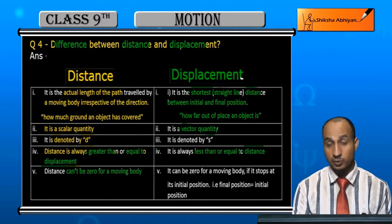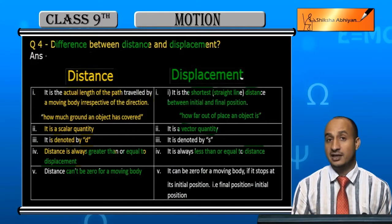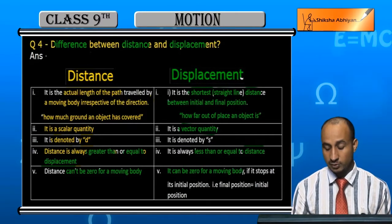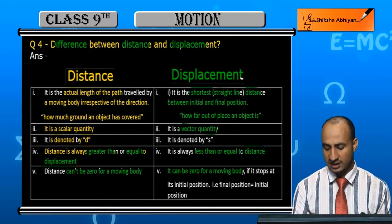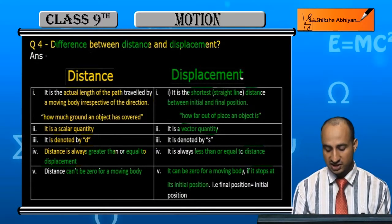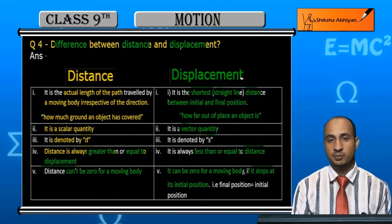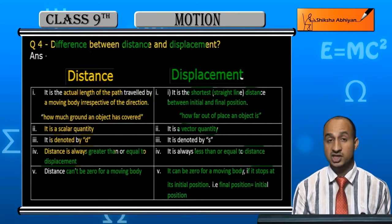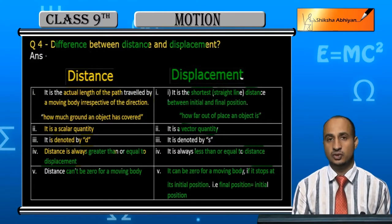Distance cannot be zero for a moving body — if a body is in movement, the distance will never be zero. However, displacement can be zero for a moving body. If the body stops at its initial position, the final position and initial position will be the same, and in that case, displacement is zero.